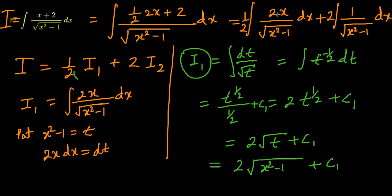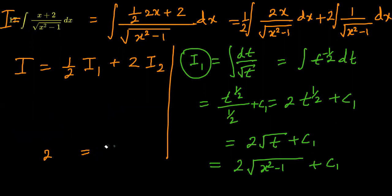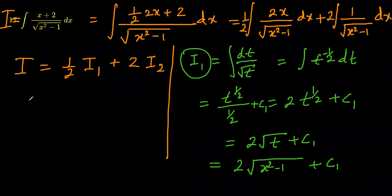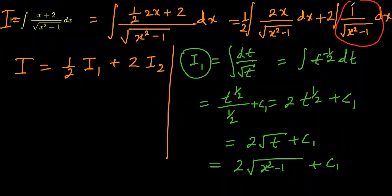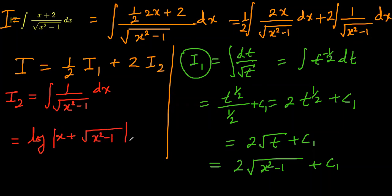Now we find i2. i2 is the integral of 1 over square root of x squared minus a squared, which is a standard formula. Here a equals 1, so we have x squared minus 1 squared. Applying the formula directly, i2 equals log of x plus square root of x squared minus 1, plus c2.